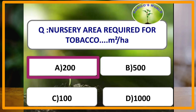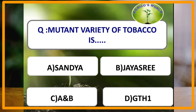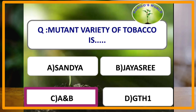The fertilizer that should not be used in tobacco is potassium chloride, because it contains chlorine, which impairs the translocation of sugar. Mutant varieties of tobacco are Sandhya and Jayshri.